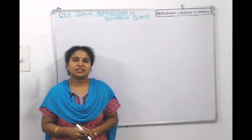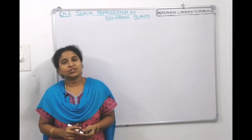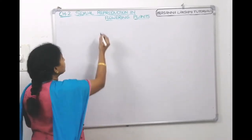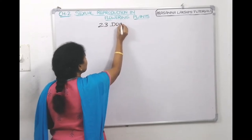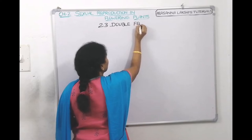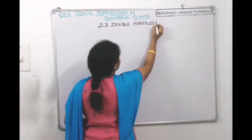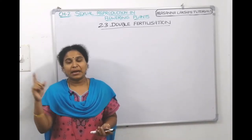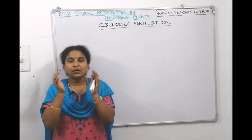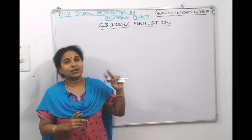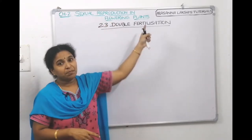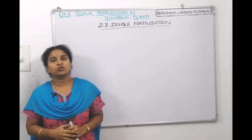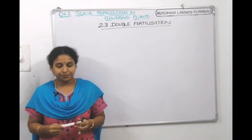Welcome everyone. In the previous lecture we discussed about breeding devices, and in the next lecture we discussed about floral intestinal interactions. In today's session we will discuss double fertilization, which is topic 2.3 in NCERT. Double fertilization is a unique characteristic feature of angiosperms, which are flowering plants.